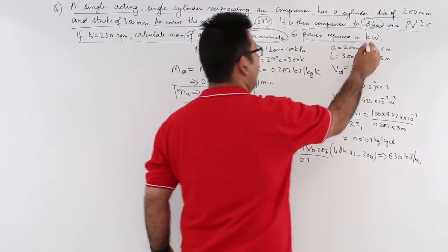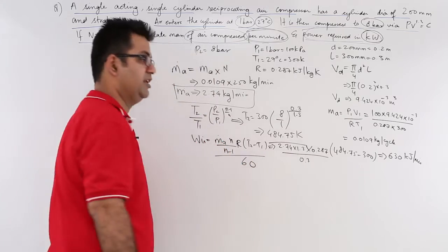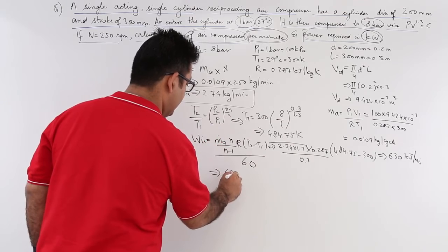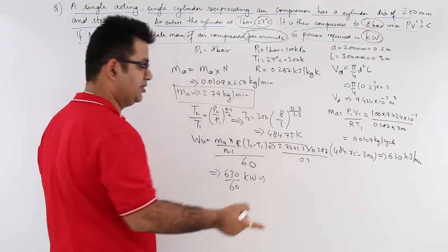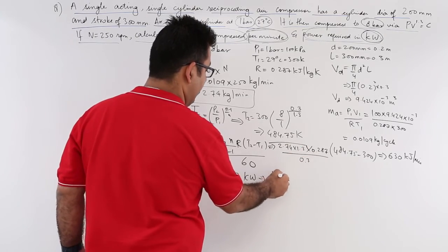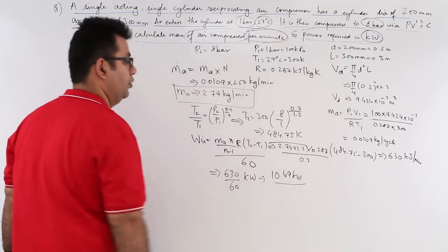To find out the power required in kilowatts, divide this by 60. So you will have 630 by 60 and this would give you kilowatts. That's almost 10 kilowatts, a little over 10 kilowatts. So you will have 10.49 kilowatts.